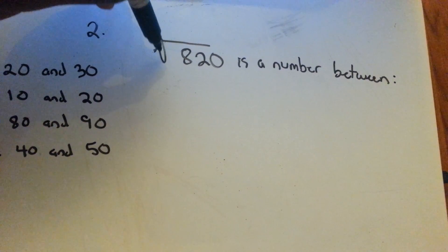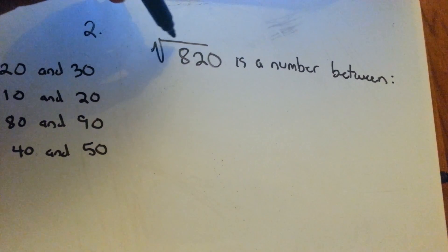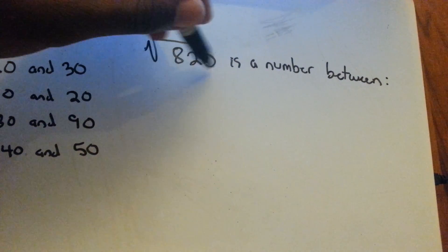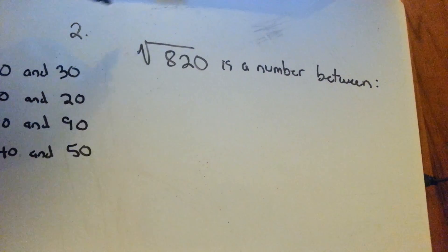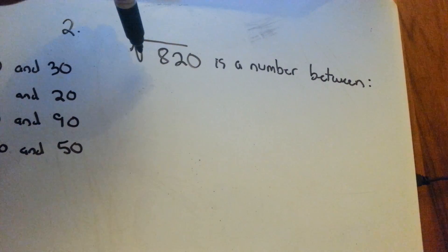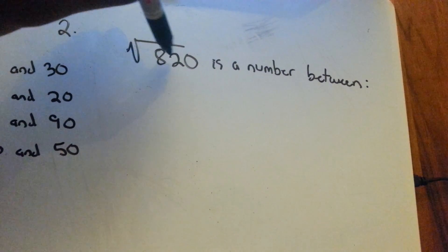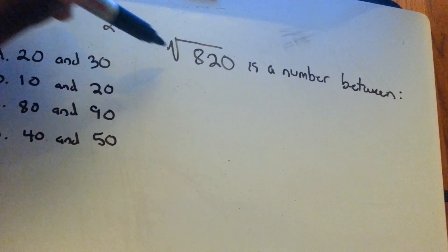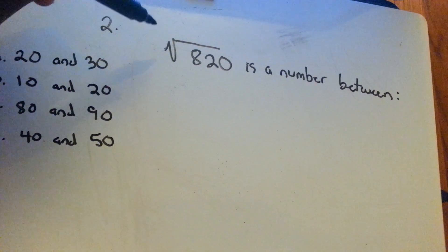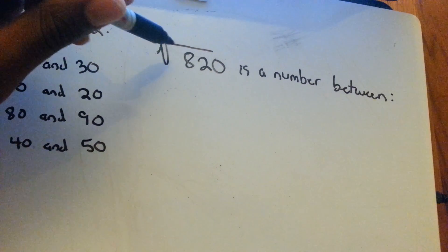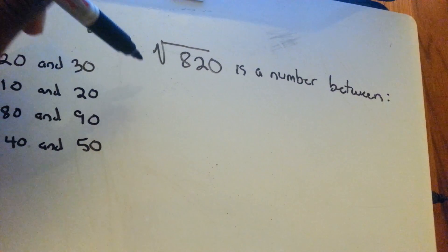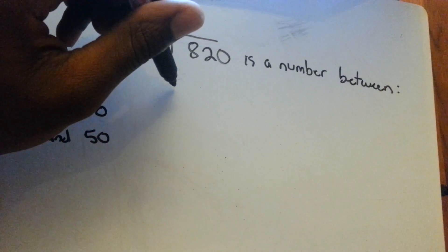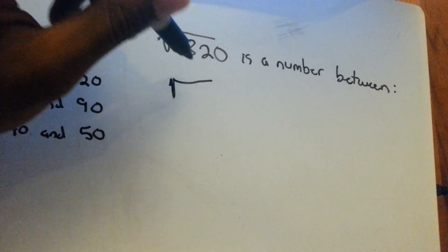It basically means you're trying to find what number times itself equals whatever is underneath or inside of this square root sign. This question is asking us to find the square root of 820 is a number between - and they give us two sets of numbers because there's no whole number times itself that equals 820. So it's going to be some kind of decimal. If it works out perfectly, it would be a number like 49.